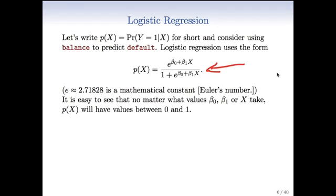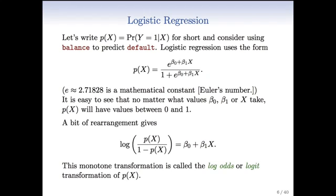So it's always got to be bigger than 0, and you can show that it's got to be less than 1. And when beta 0 plus beta 1 X gets very large, this approaches 1. So this is a special construct, a transformation of a linear model to guarantee that what we get out is a probability.